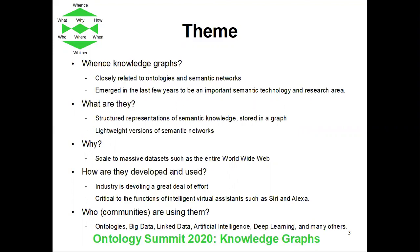The theme as specified on the Ontology Summit 2020 page goes through some of these. So, whence knowledge graphs — what's the history? They're closely related to ontologies and semantic networks and emerged in the last few years. Then what are they? They're basically structured representations of semantic knowledge stored as a graph — lightweight versions of semantic networks. Then why would we bother? The idea is that they scale to massive datasets, which are very important today with modern AI and machine learning techniques.